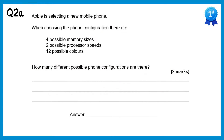For the first part of this question there are four memory sizes, two processor speeds, and 12 colours. So to get the configurations we just times those together, so 4 times 2 times 12 gives you 96.